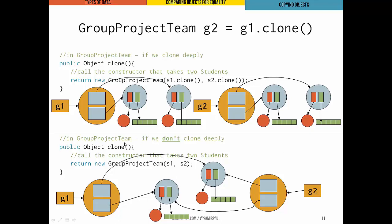If we don't clone deeply — if we just call the GroupProjectTeam constructor with s1 and s2 rather than their clones — we end up with two GroupProjectTeam objects, g1 and g2, both containing references to the same student objects. That's probably not what we intended, because if we change something in g1, such as a student's name or test scores, we'll get the same changes reflected through g2.